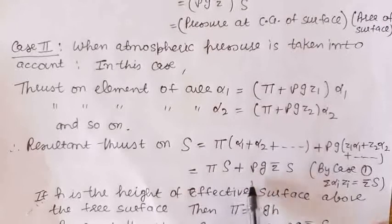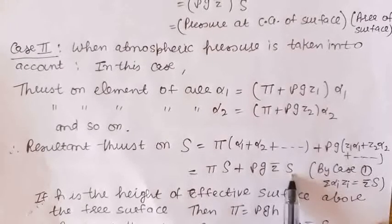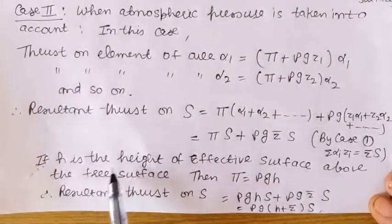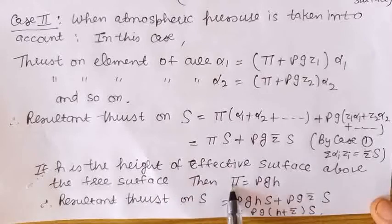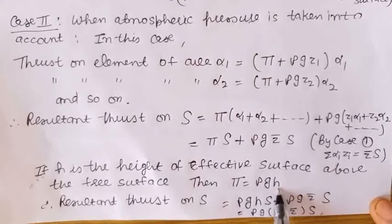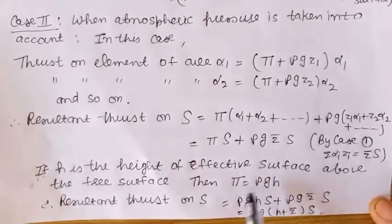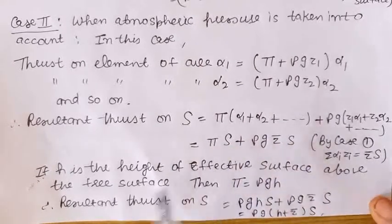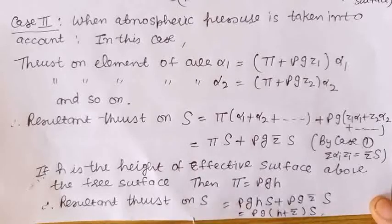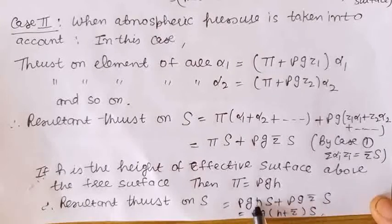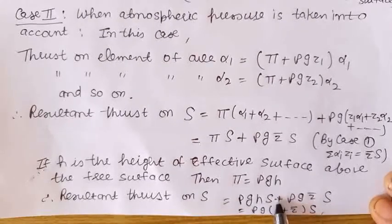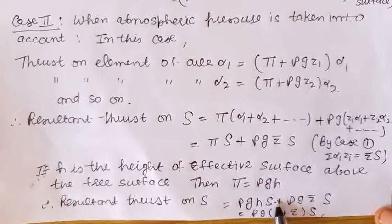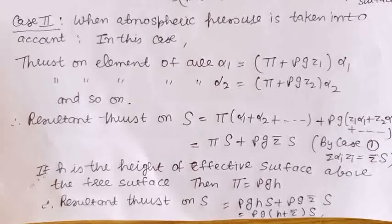So the resultant thrust on S is given by Pi into S plus rho into g into Z-bar into S. Now if h is the height of the equivalent liquid surface above the free surface, then the atmospheric pressure is given by rho into g into h. Substituting this value of atmospheric pressure, the resultant thrust on the plane surface S equals rho g h times S plus rho g Z-bar times S. Taking rho g as common, we get the resultant thrust equals rho g into (h plus Z-bar) into S. This gives the resultant thrust on the given plane surface when atmospheric pressure is taken into account.